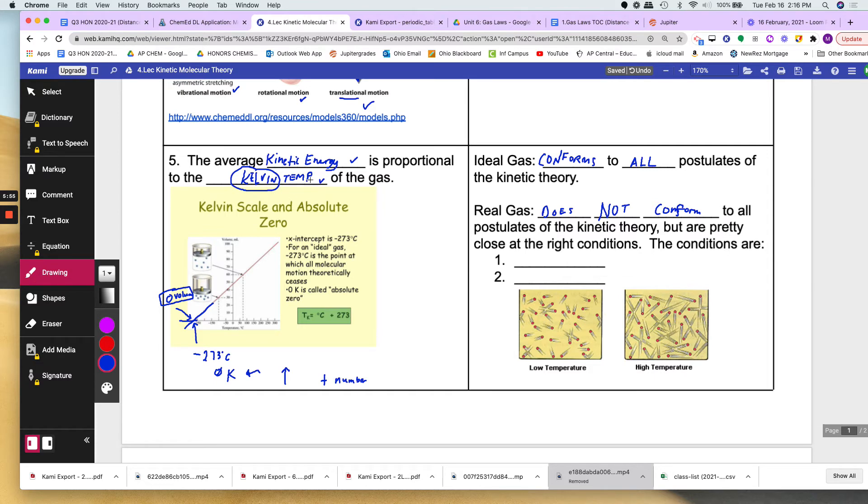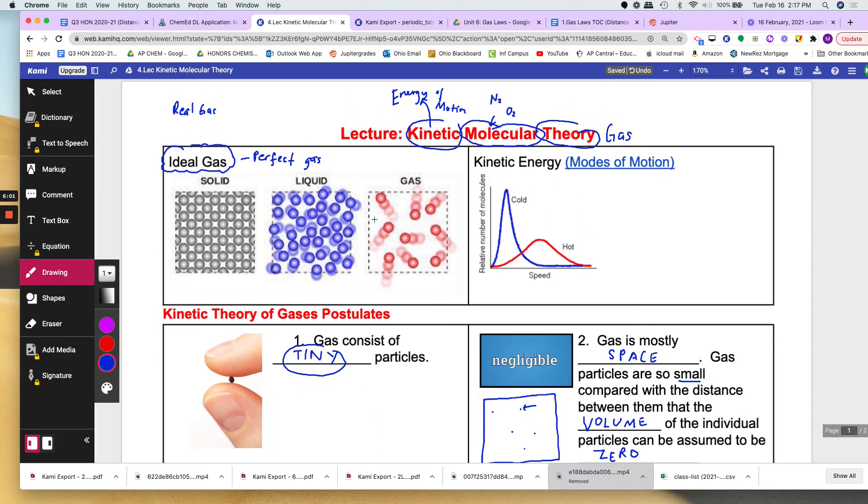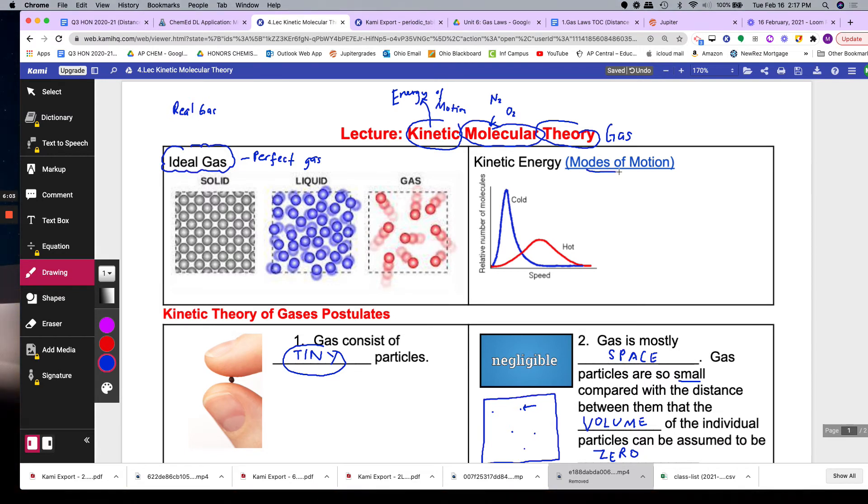So as the Kelvin temperature increases so does the kinetic energy of the substance. It'll move faster. Now something about the kinetic energy. I told you before that there are different modes of motion. So not only will they move faster they can also rotate more or they can vibrate in place.